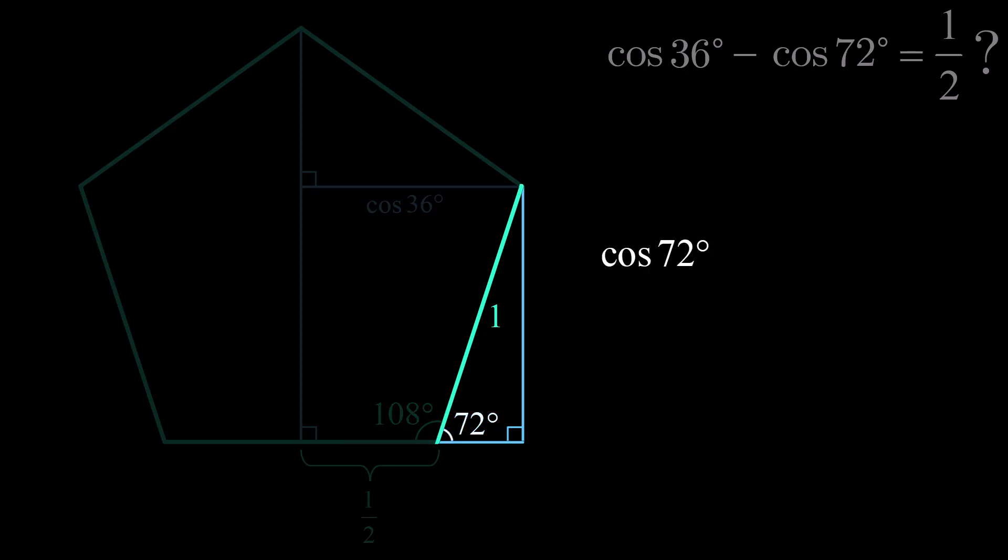The cosine of this 72 degree angle is equal to its adjacent side length divided by the triangle's hypotenuse length. Once again, substituting 1 for the hypotenuse length and simplifying the right side of the equation gives us the adjacent side length, which in this case is cos 72 degrees.